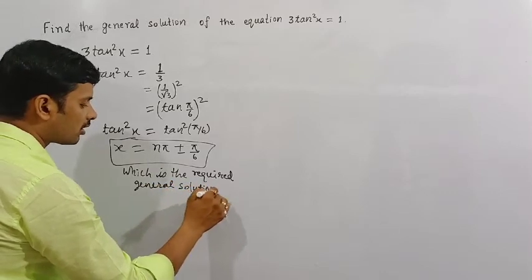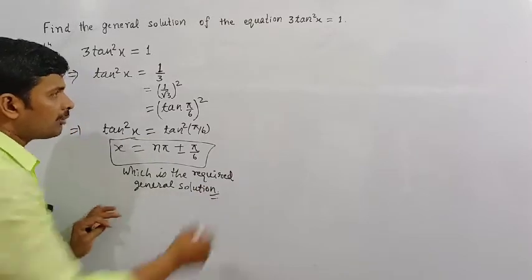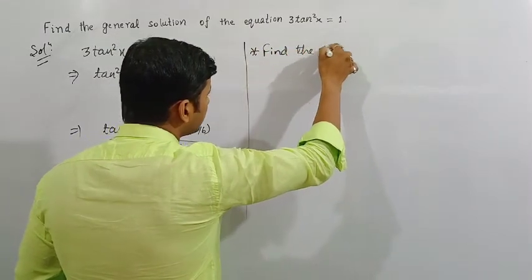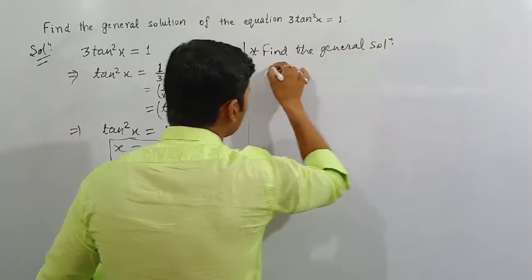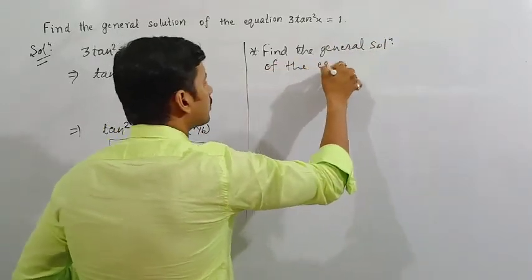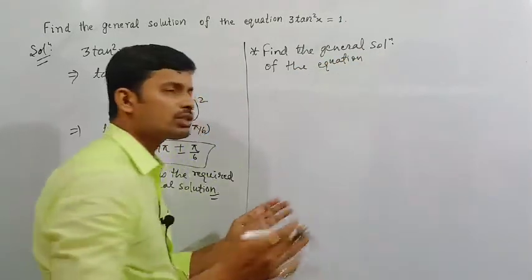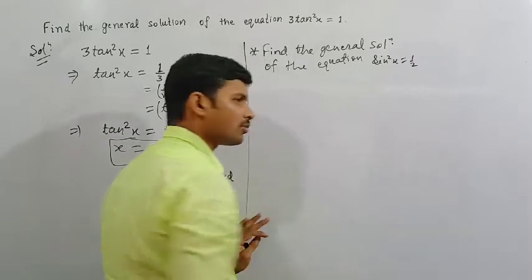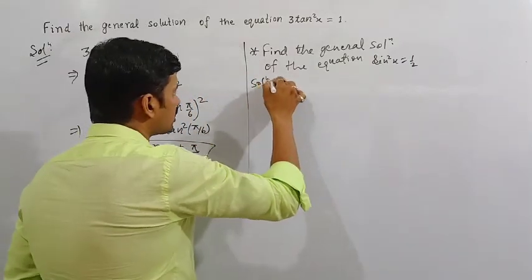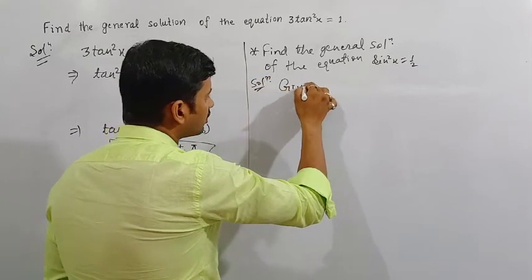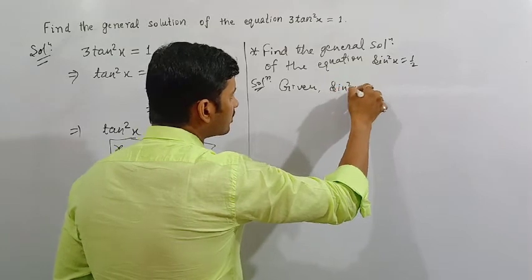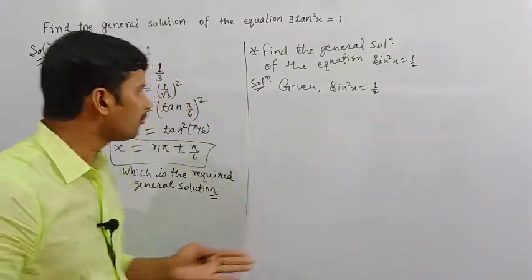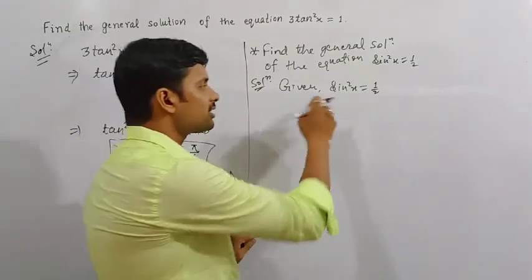I think everyone got it. Let me explain one more question: find the general solution of the equation sin squared x is equal to 1 by 2. Since the left-hand side is in square form — same as the previous question — we must convert the right-hand side into square form as well.